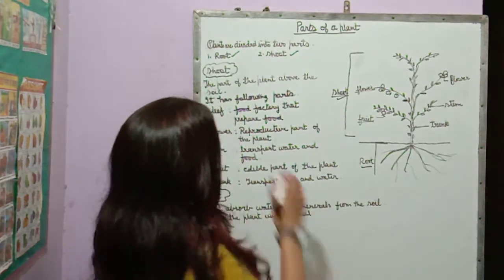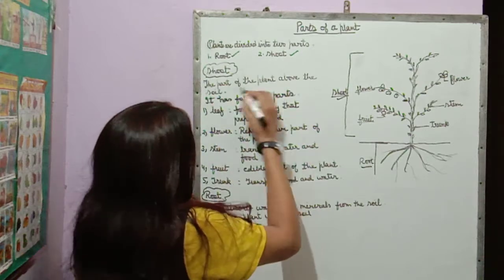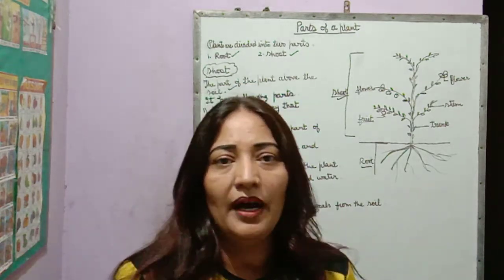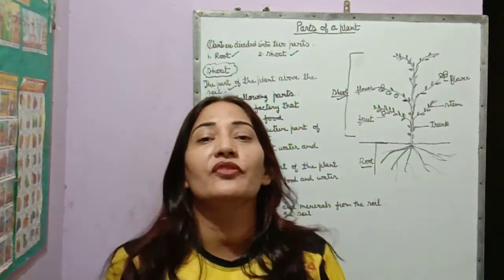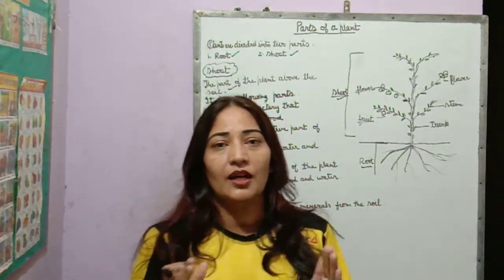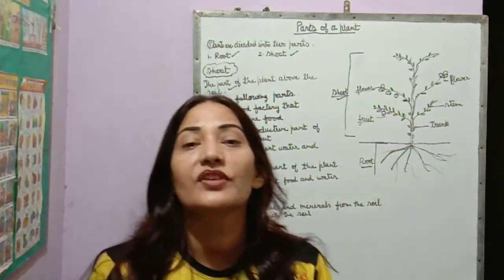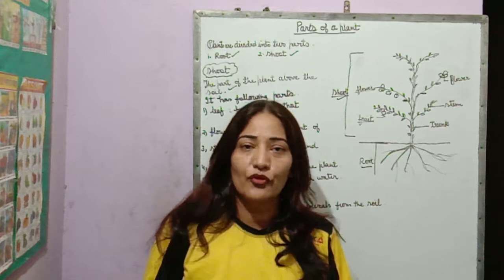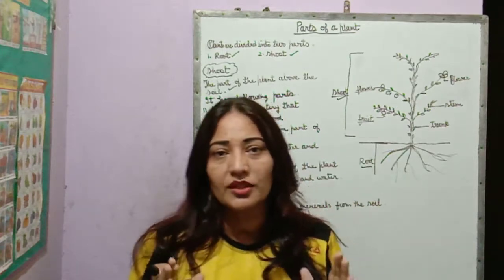Now, the part of the plant above the soil — shoot is that part which is above the soil. Any plant's part that is above the soil and is visible to us, the part we can see, that part is called shoot system.